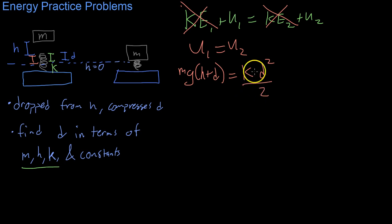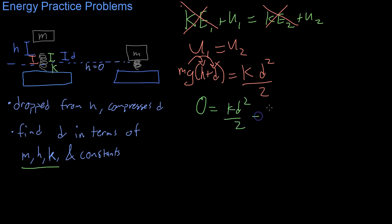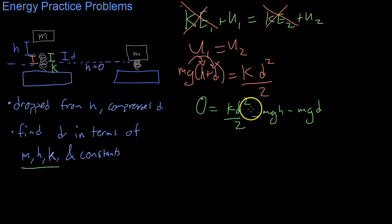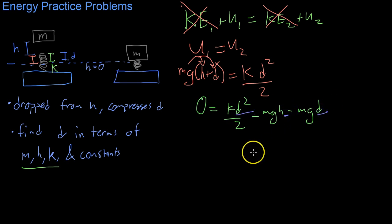From here we distribute mg in and move everything to one side, and we get that 0 equals kd²/2 minus mgh minus mgd. Because we have a polynomial with a d² term, a d term, and a constant term, we can use the quadratic formula.